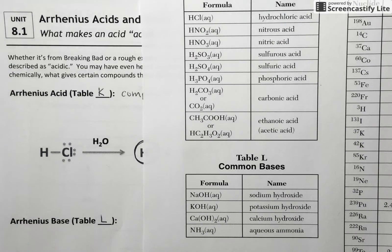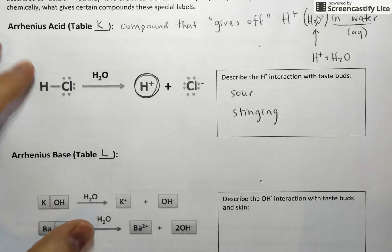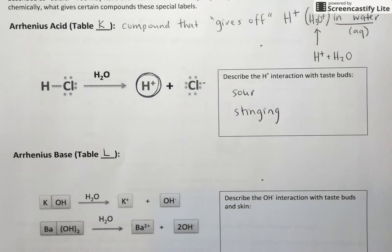And you're going to notice of these bases, three of them contain the hydroxide ion. Again, hydroxide is a name coming right off of table E. We know it as OH minus.